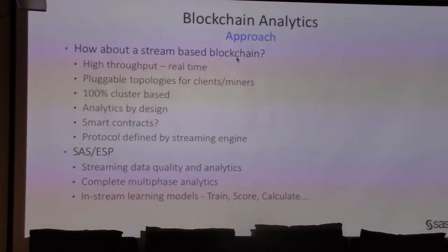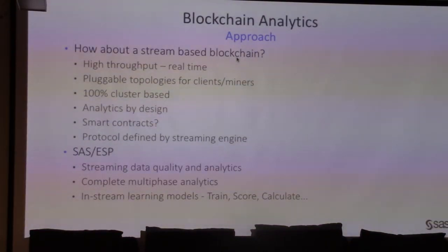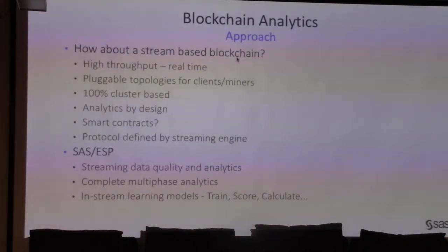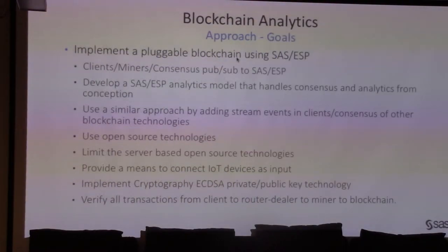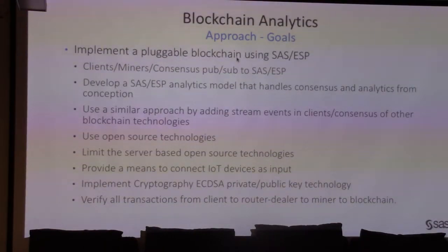My approach: high throughput in real time. If you're going to attach to a blockchain, you cannot be intrusive on it — that's just the bottom line, you've got to be fast. I wanted to be able to plug in different topologies. My blockchain is basically a simulator so you could connect different topologies into it. It's 100% cluster-based and it's analytics by design. I implemented a plug-in blockchain using open source technologies. I used the elliptic curve cryptography that Bitcoin uses, SHA-256 hashing — same as Bitcoin. It's all pretty much done like that.